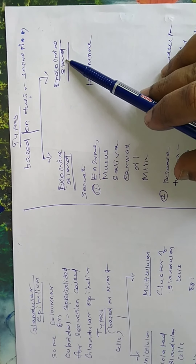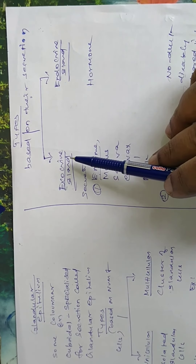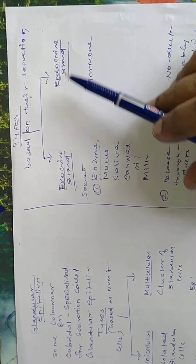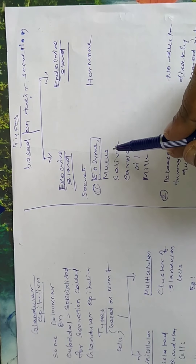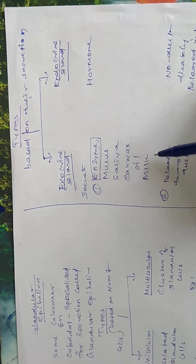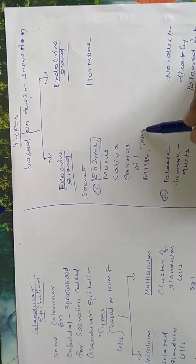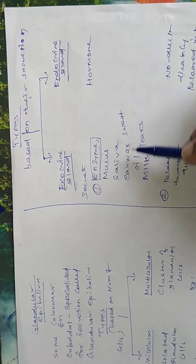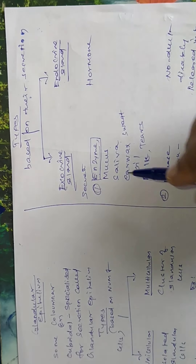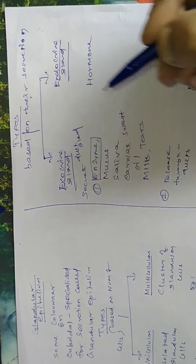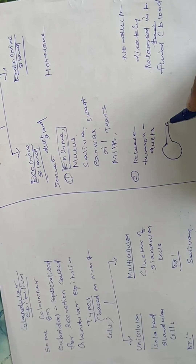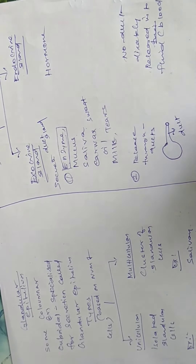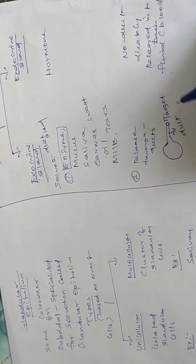The exocrine gland secretes mainly enzymes and also mucus, saliva, earwax, milk, tears, sweat, etc. The exocrine gland is called a duct gland because it has a gland-like structure and one tube-like structure called a duct. It releases its content through the duct directly to the target place. For example, the salivary gland is present below the tongue, but its secretion goes directly to the mouth — the mouth is the target place.